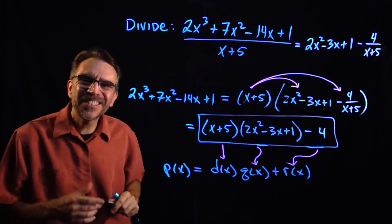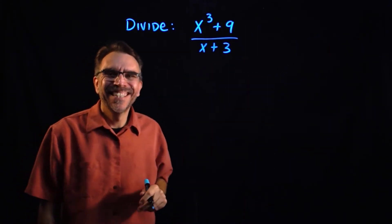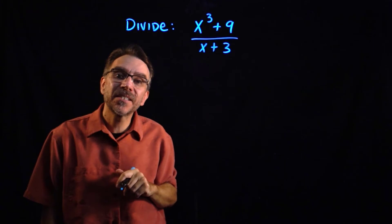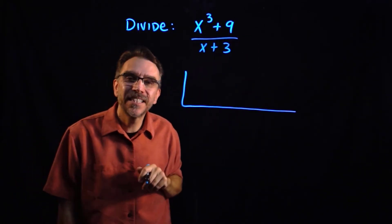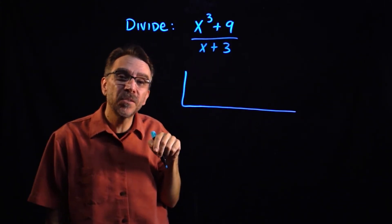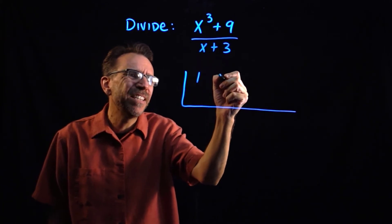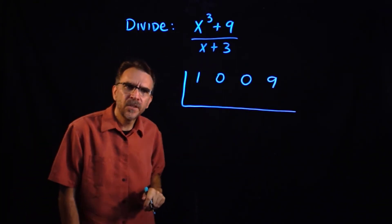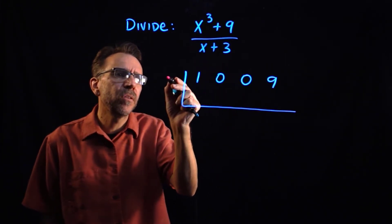For our last example we divide x cubed plus 9 by x plus 3. This requires placeholders. Notice we don't have an x squared term or an x term in the dividend, so we write the coefficients as 1, 0, 0, and 9 — those zeros are the placeholders for the missing terms. The divisor x plus 3 gives a root of negative 3.